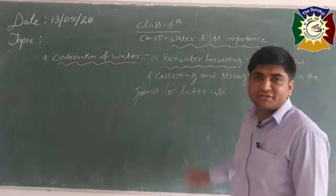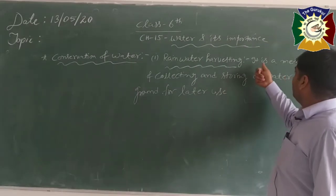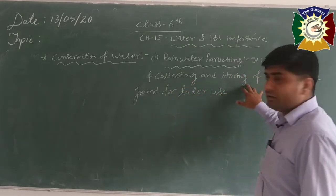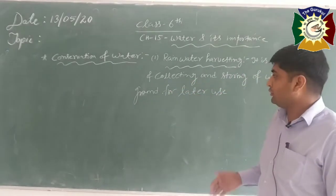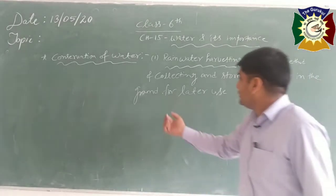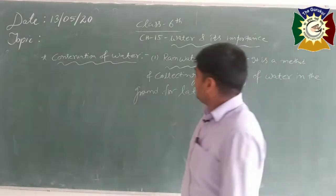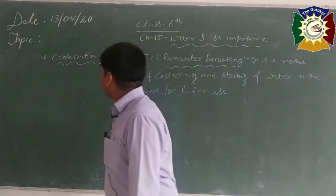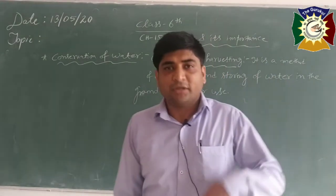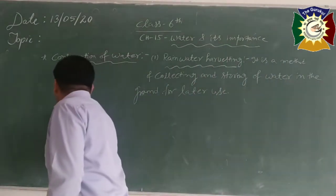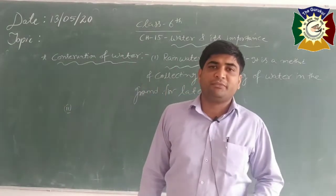So this is the first method of conservation of water — rainwater harvesting. In this method, we are collecting and storing the water in the ground, or underground, for later use. Now the second method in conservation of water.